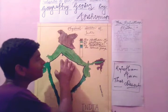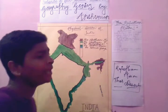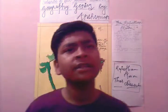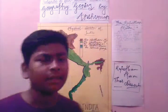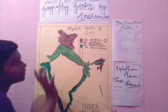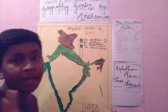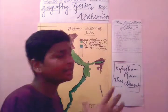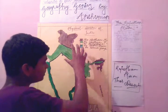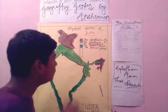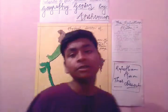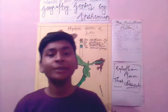They form a plain here and that plain is called the Indus Basin. The most of the area covered by the Indus Basin is Jammu and Kashmir and Himachal Pradesh. This was all about the Indus Basin.